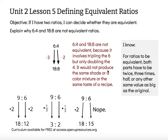If this were a color mixture, then the color would be lighter or darker than what it usually is because the ratio was not maintained. So 6 to 4 and 18 to 8 are not equivalent because it involves tripling the 6 but only doubling the 4. It would not produce the same shade of a color mixture or the same taste of a recipe.